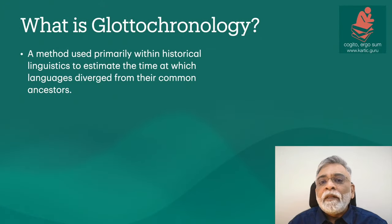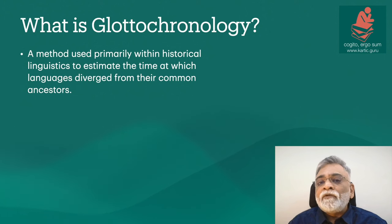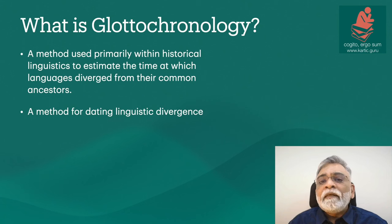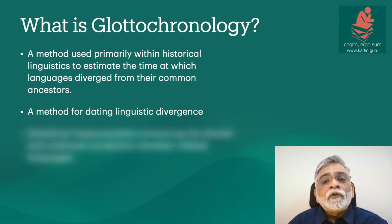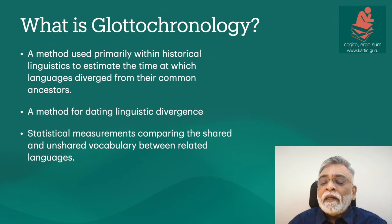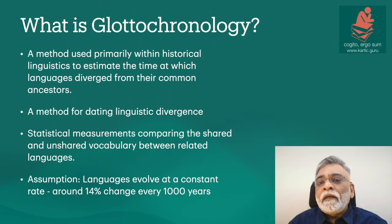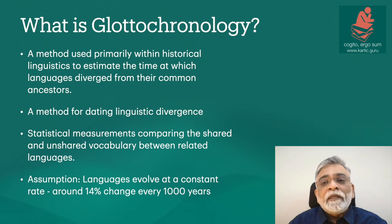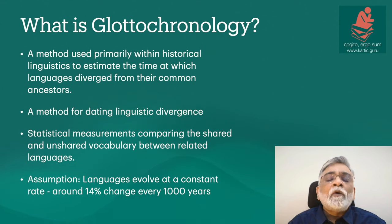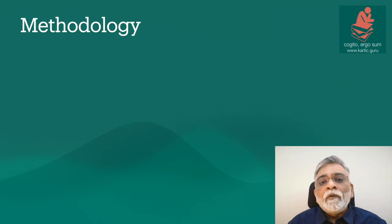Glottchronology is a method used primarily within historical linguistics to estimate the time at which languages diverged from their common ancestors — it is a method for dating linguistic divergence. The approach relies on statistical measurements comparing the shared and unshared vocabulary between related languages. The underlying idea is that languages evolve at a relatively constant rate, much like the concept of a molecular clock in biology. The frequently cited value of this constant rate is fourteen percent change in vocabulary every thousand years.